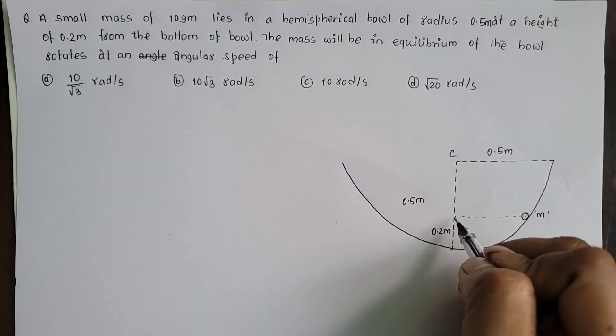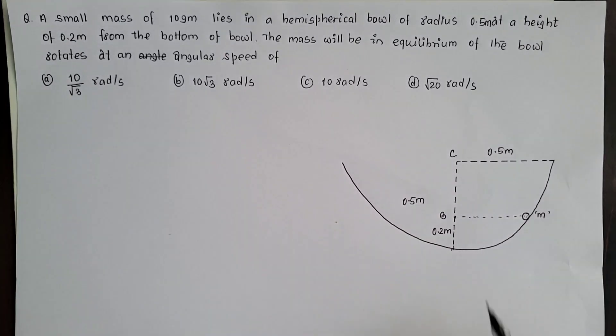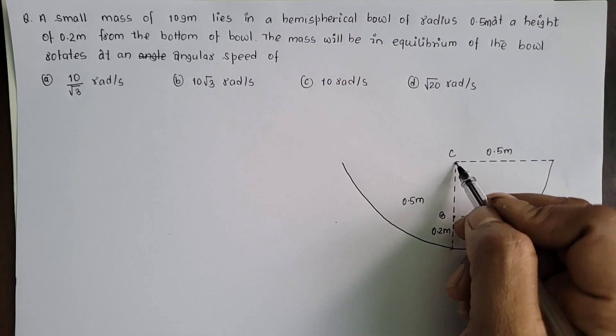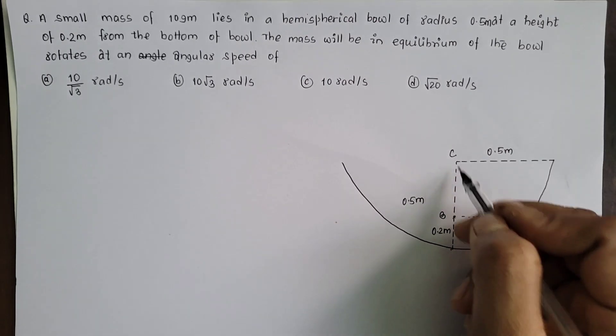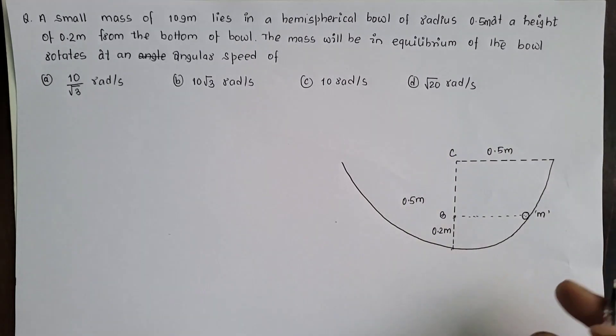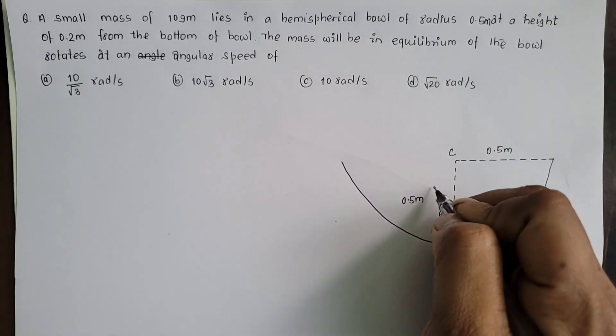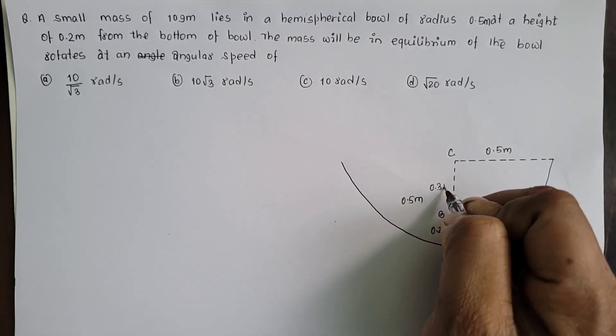Height of the bowl lai, kune point B lhe symbolize garaeum. Then the distance of center to the point of B, CB ko value auncha total 0.5 minus 0.2. CB ko value auncha 0.3 meter.